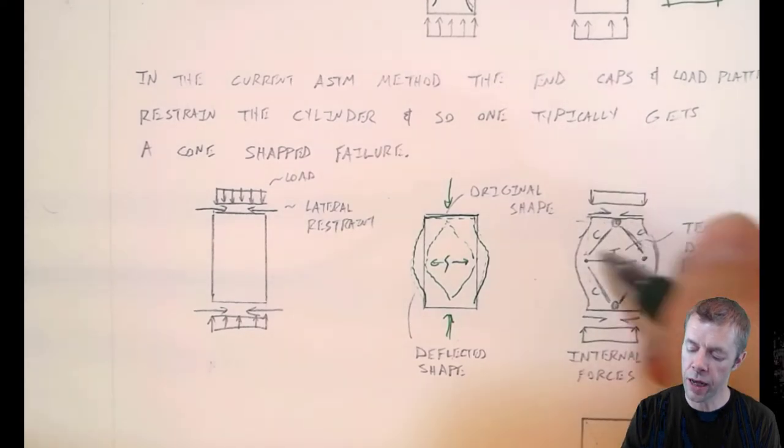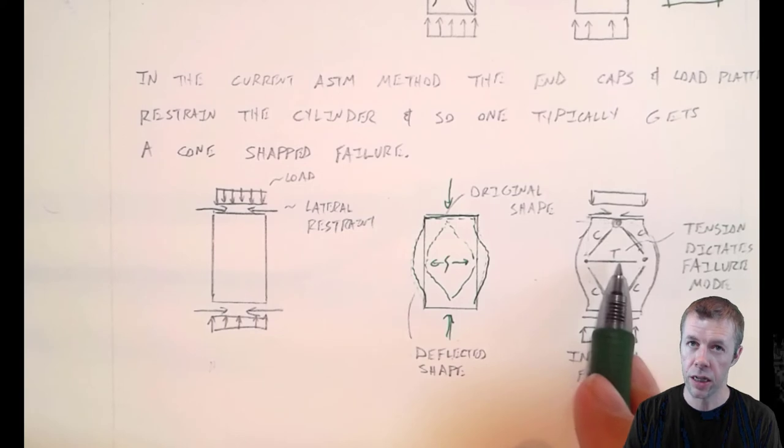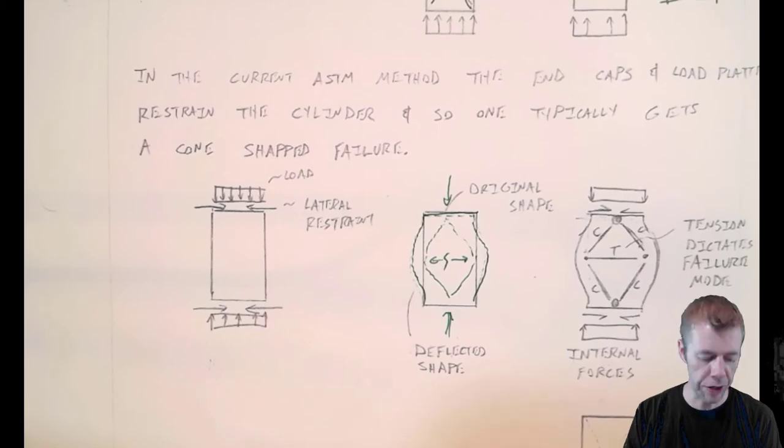This tension is going to dictate the failure mode. This idea, this is a compression area and a compression area, compression, compression, and this tension is going to dictate the failure mode. And again, that's why the cracks occur as they do.